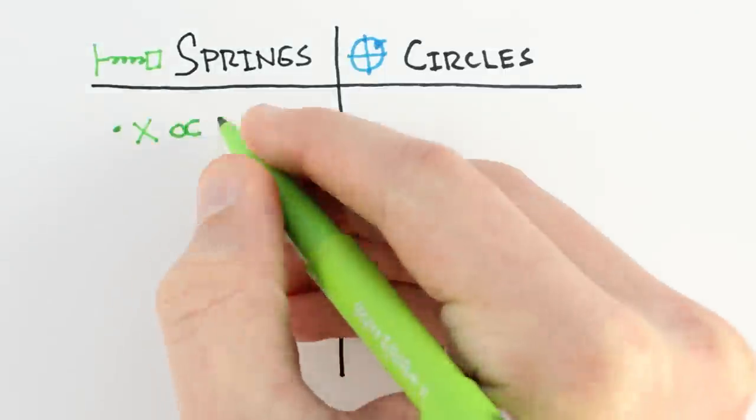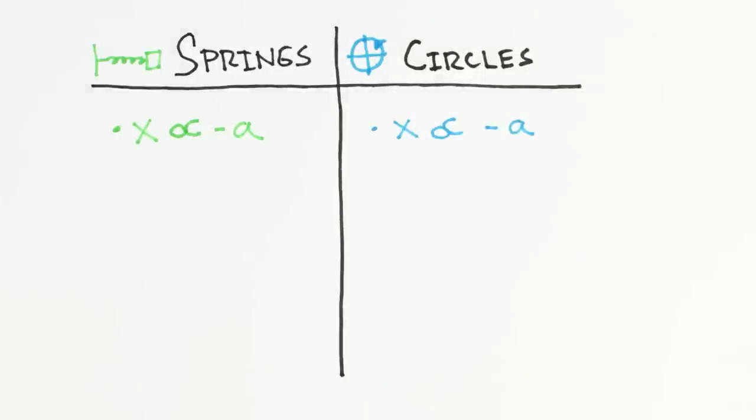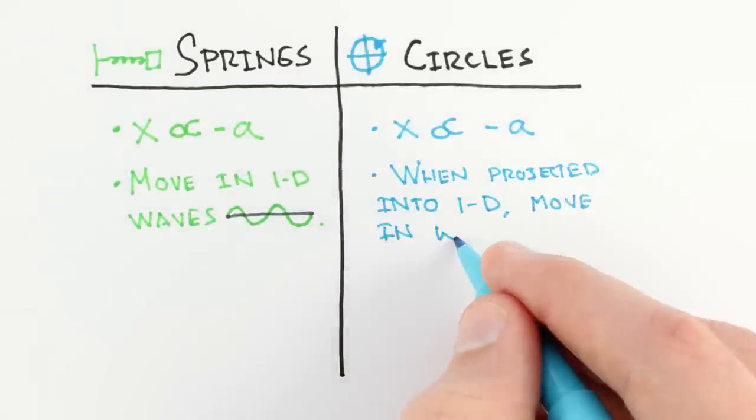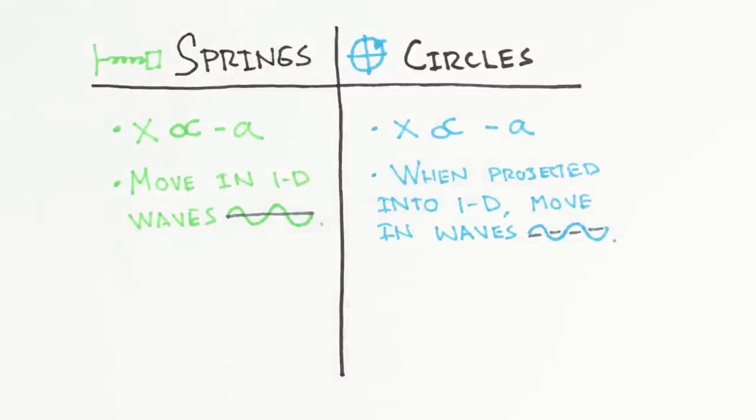Moving in a circle requires a special relationship between position and acceleration, which is the same exact relationship that a spring imposes. These relationships govern the motion of each object, and since they're the same, the objects will follow the same paths.